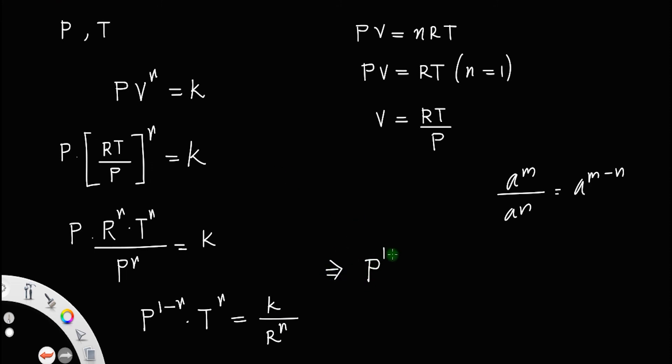which means P raised to 1 minus gamma T raised to gamma equal to a constant, another constant. Let us call that as K dash. So this is the adiabatic relation between pressure and temperature.